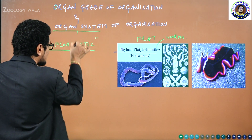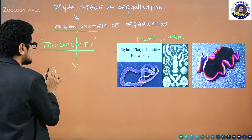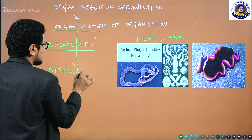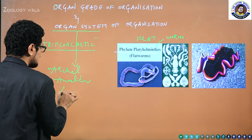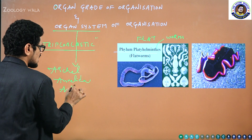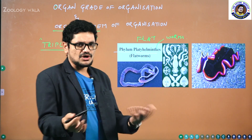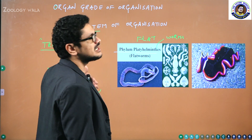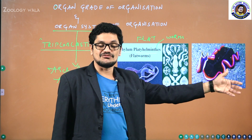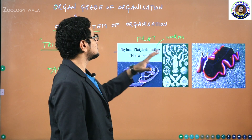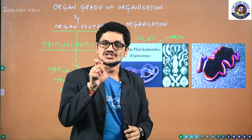The organ system level of organization is seen from Platyhelminthes onwards — followed by Aschelminthes, Annelida, Arthropoda, Mollusca, Echinodermata, Hemichordata, and Chordata. Starting from Platyhelminthes all the way to phylum Chordata, all organisms exhibit this highly developed organ system level of organization.